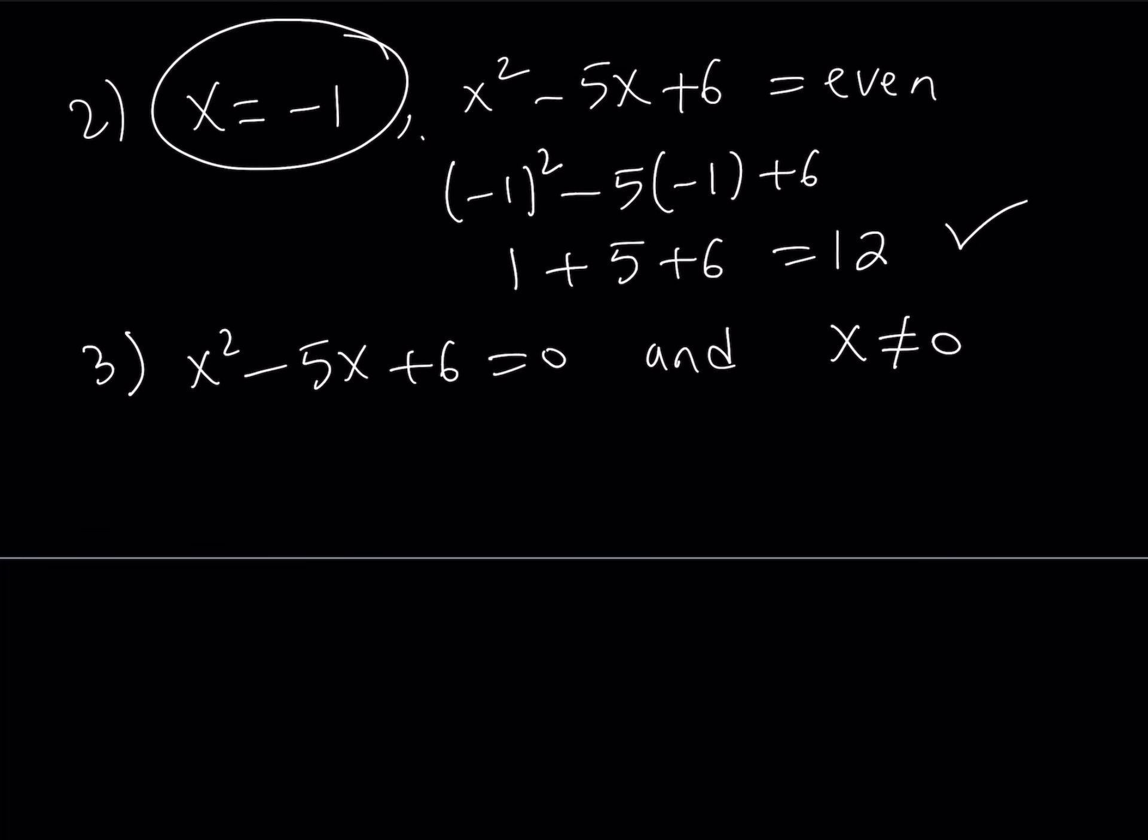Well, x squared minus 5x plus 6 is factorable. As you know, we're looking for two numbers whose product is 6 and whose sum is negative 5 and those numbers are negative 3 and negative 2. So you can write this as x minus 3 times x minus 2 as a product equals 0 and you don't want x to be 0. Great.